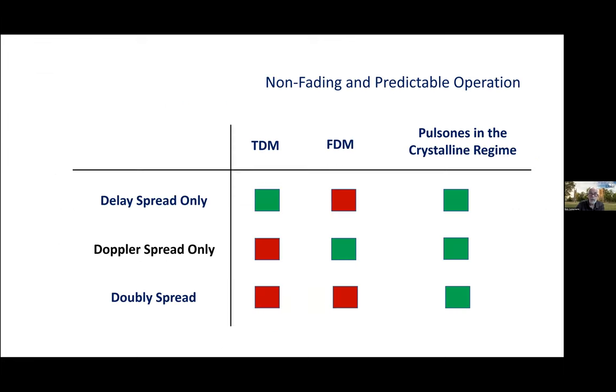Traffic light slide. So, summarizing the advantages of probing and communicating with these delay-Doppler domain pulses, these pulsones, in the crystalline regime. Everything is green.